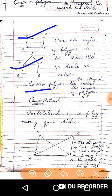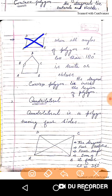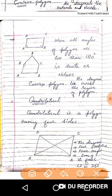One more thing about a Convex Polygon: when you draw their diagonals, they all lie inside the region of the Polygon. So a Convex Polygon is a Polygon wherein all the angles are less than 180 degrees, and the diagonals lie inside the region of the Polygon.